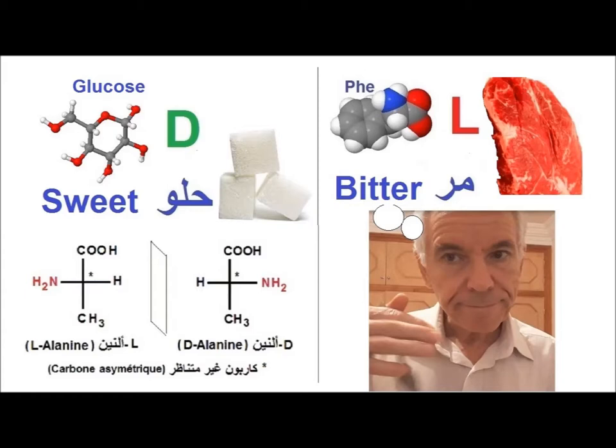Natural sugars are D configuration. However, natural amino acids are L configuration.